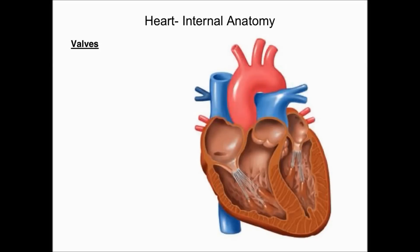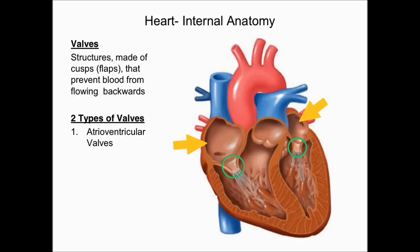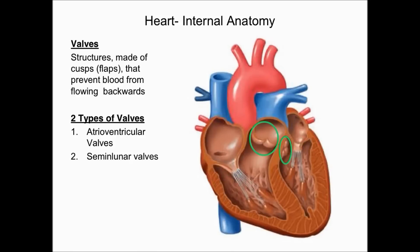In this lecture we'll discuss heart valves and their functions. Valves are structures made of cusps — flaps, sometimes called leaflets — that prevent blood from flowing backwards. There are two types of valves. The first are atrioventricular valves, found between the atria and the ventricles. The second type are semilunar valves, found between the ventricles and the major blood vessels that exit the heart, such as the aorta and the pulmonary trunk.